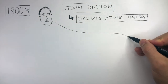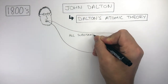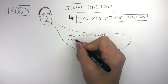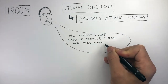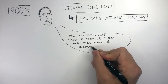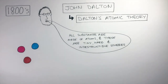In this theory, Dalton said all substances are made of atoms, and these are tiny, hard, indestructible spheres. Dalton believed atoms may have looked something like snooker balls, due to how hard and spherical they are.